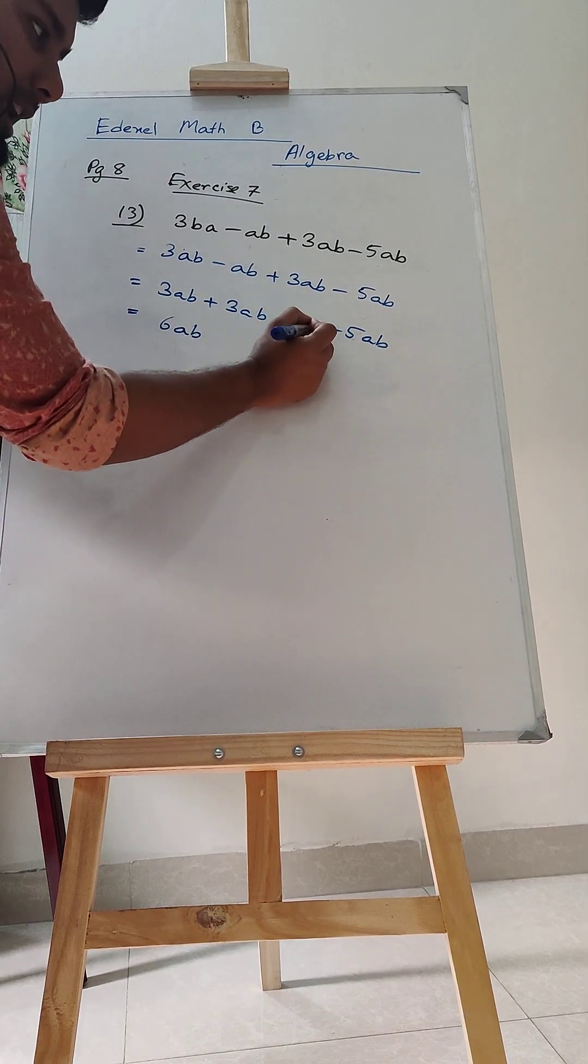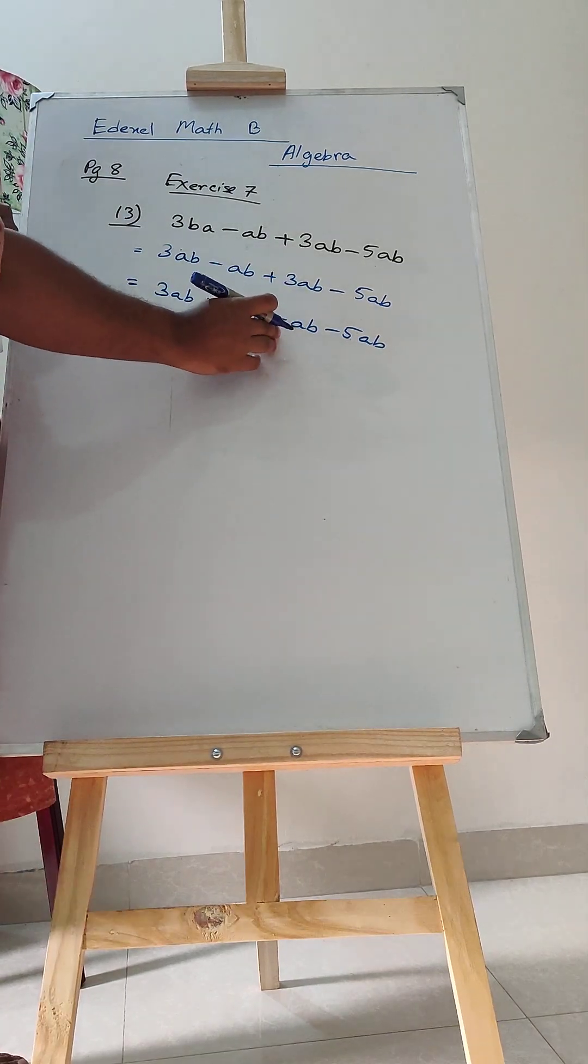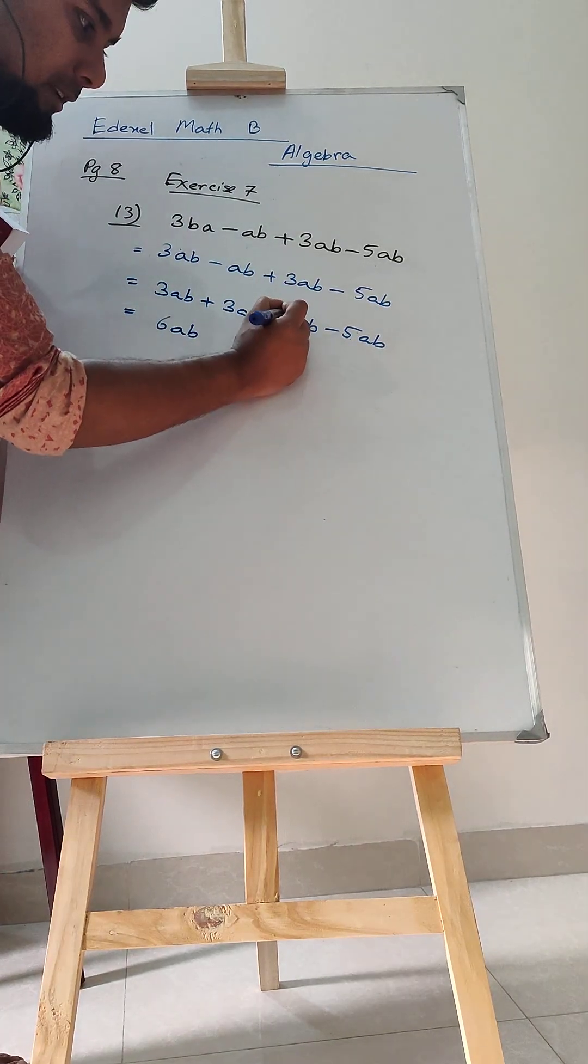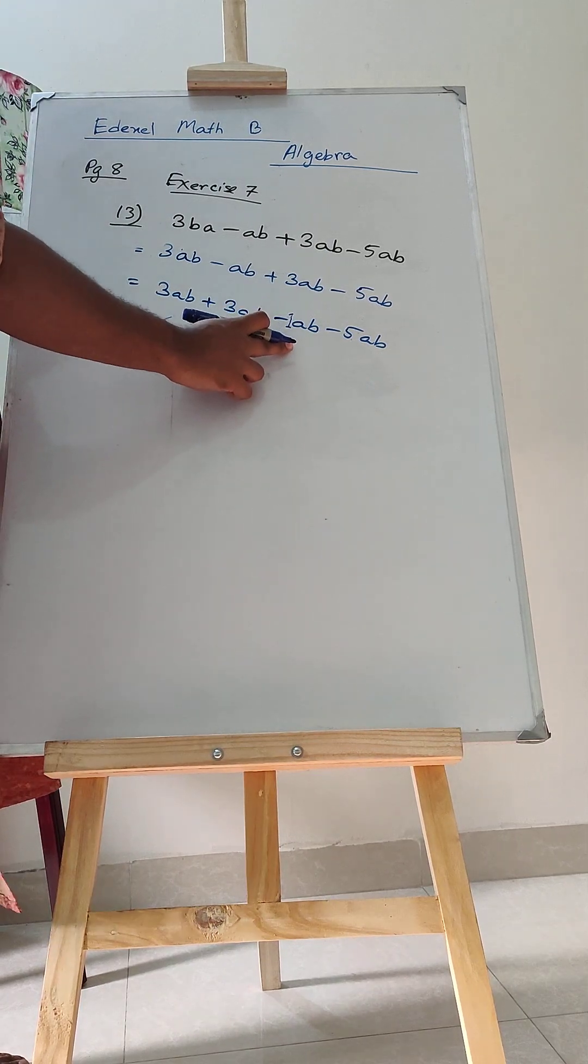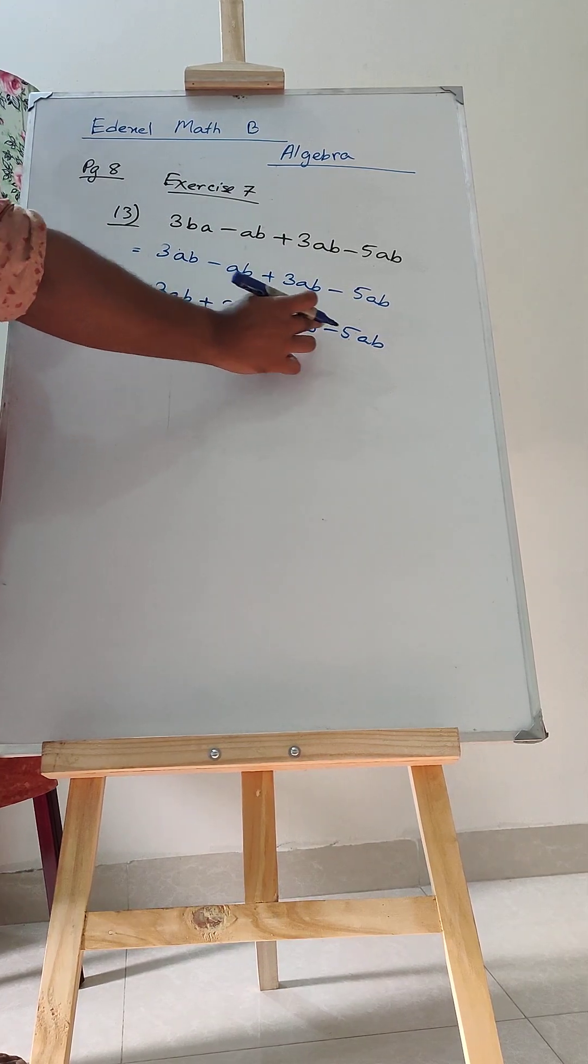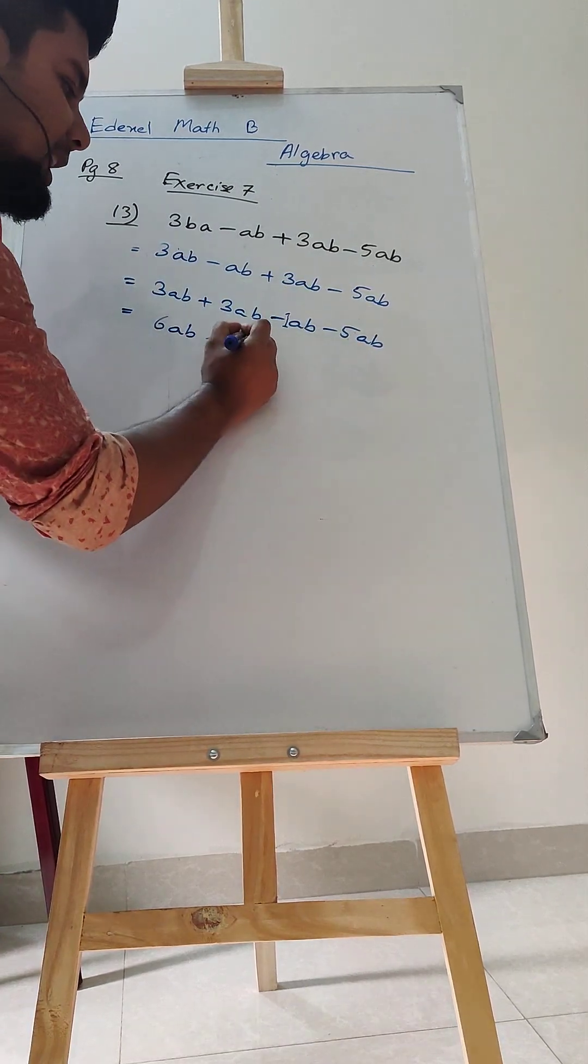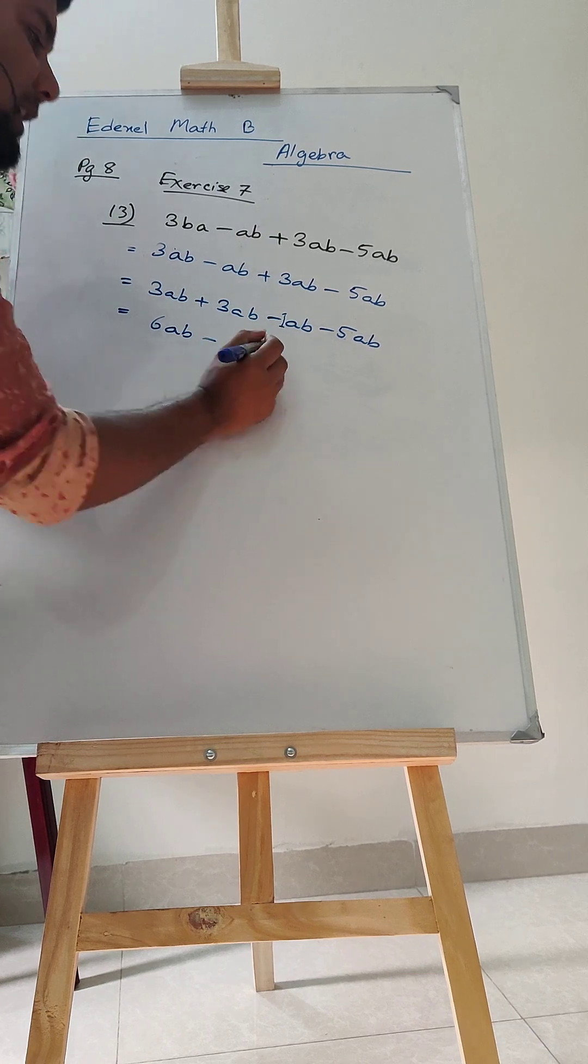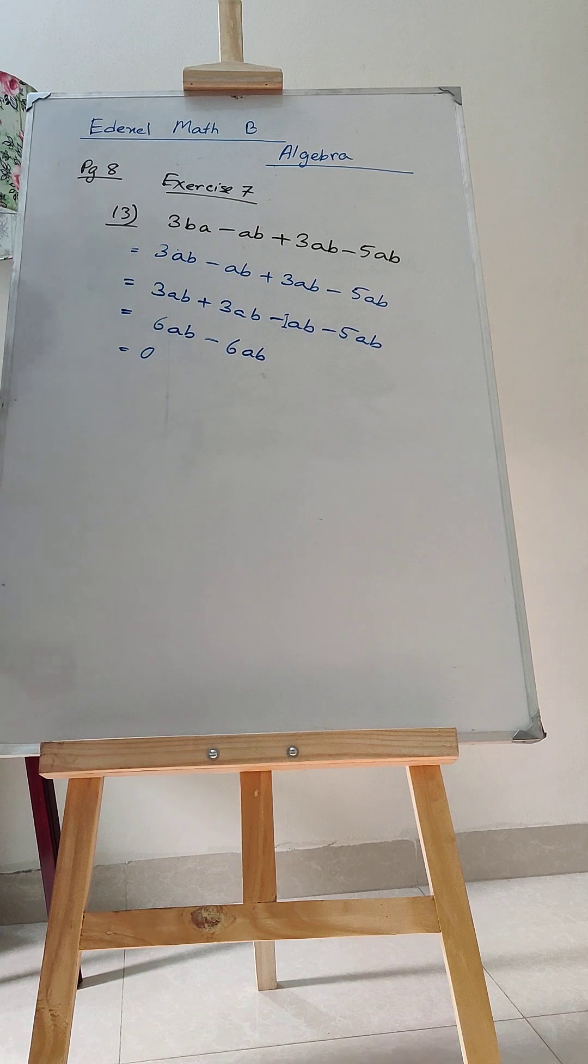And here, if you do not have any number, any constant at the beginning, we consider it as 1. So, this is like an invisible 1 in front of this minus AB. So, minus 1, minus 5. Both have got set ABs. So, minus 1 minus 5 will be minus 6AB. Now, this 6AB minus 6AB, ultimately, your answer will be 0.